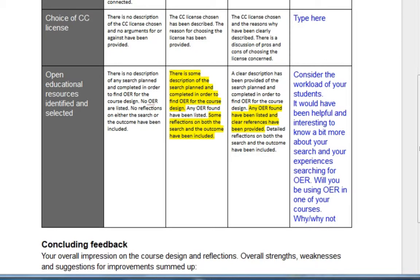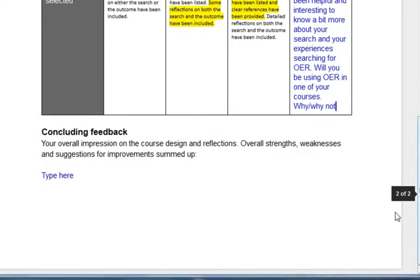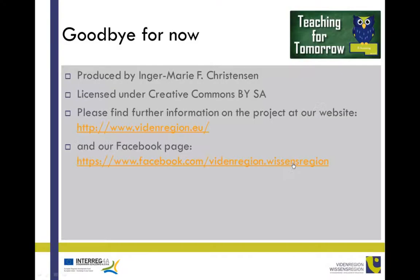As you can see, you can end by summing up and providing overall feedback. This is how you proceed — carefully reading each part of the document you're reviewing, then highlighting the appropriate passages in the rubric to signal to the person what they did well and where they could improve their course design and reflections. I hope this video will help you make some good constructive reviews that can benefit your fellow participants. Enjoy, and bye for now.